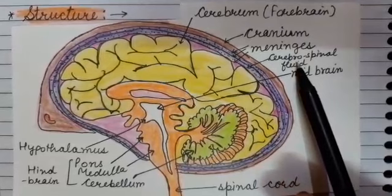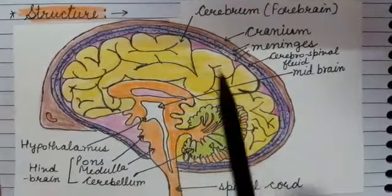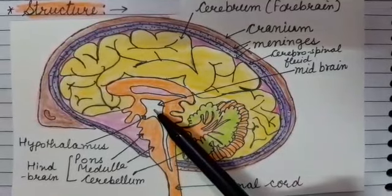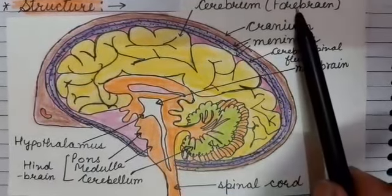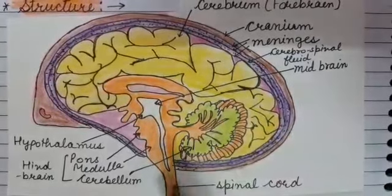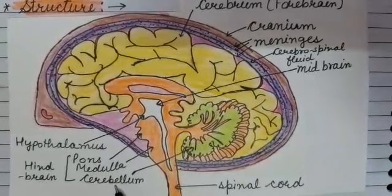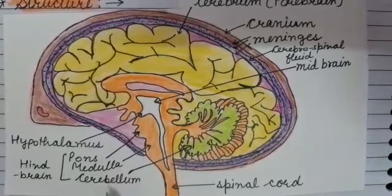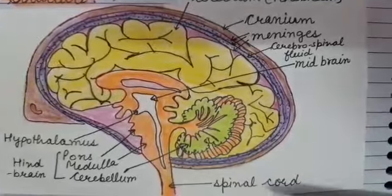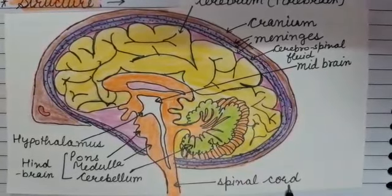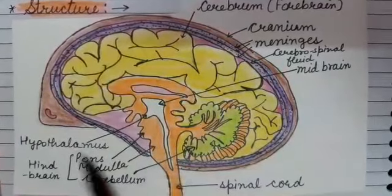These three things provide protection from mechanical shocks. Then there is the Forebrain — the yellow part. Then is the Midbrain, and then in the last there is the Hindbrain. The Forebrain mainly consists of the Cerebrum. The Midbrain has no further divisions. The Hindbrain has three further divisions: Pons, Medulla, and Cerebellum. The posterior part of the Hindbrain is connected with the Spinal Cord.